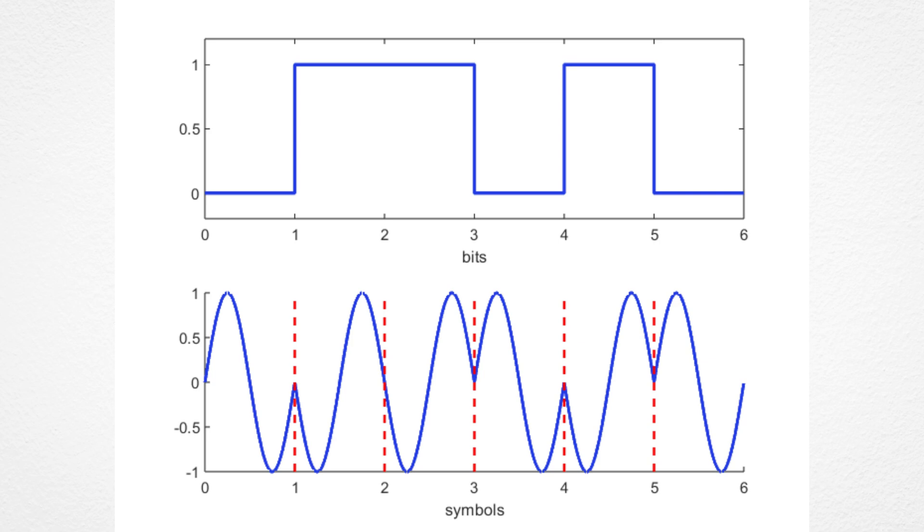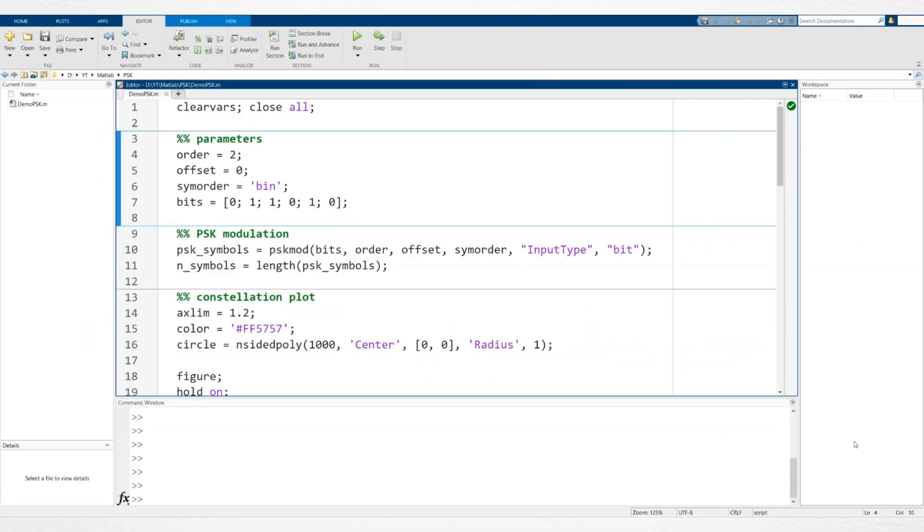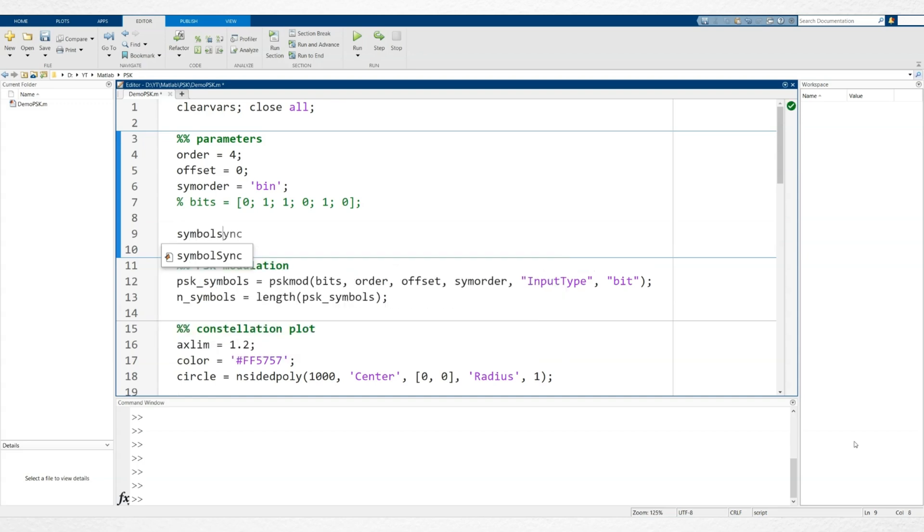Now, let's increase the modulation order to 4 and experiment with QPSK modulation. To do this, we need to make a few updates to the code. First, instead of manually defining the input bits, we'll generate them automatically. Since we want one symbol for each PSK state, we'll create 4 symbols ranging from 0 to 3 for QPSK.